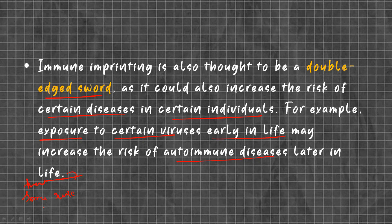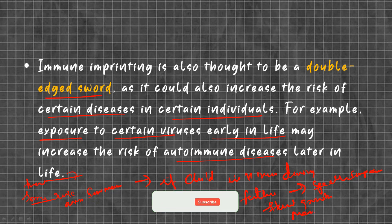There are some risks associated with immune imprinting, because if a child is infected by a virus during development, they may face future problems such as speech impairment, stunted growth, and mental disability.